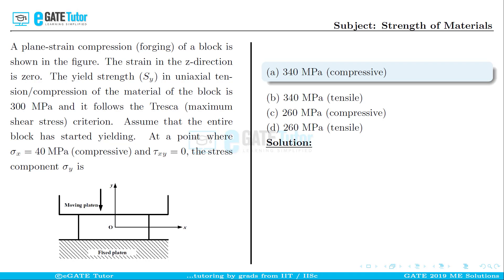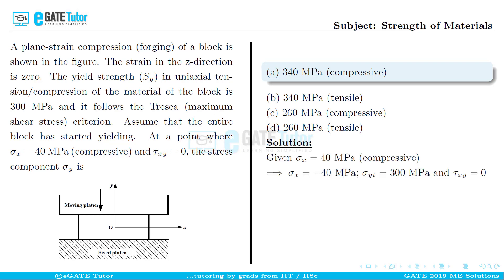The correct answer is option A. We are given sigma_x = 40 MPa compressive, which can also be written as sigma_x = -40 MPa. We are also given the yield strength in uniaxial tension or compression: sigma_yt = 300 MPa, and tau_xy = 0.